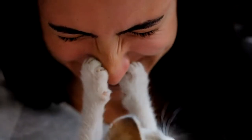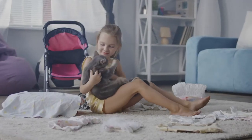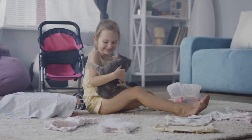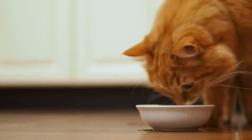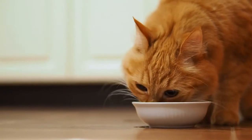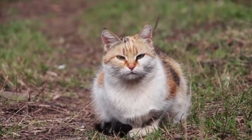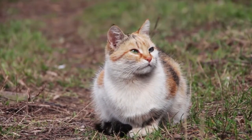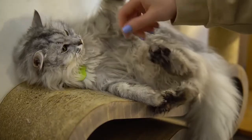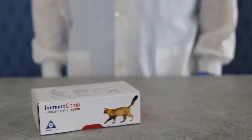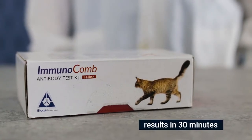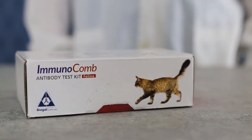Immunocomb feline coronavirus FCOV antibody test kit is designed to determine cat serum IgG antibody titer to feline coronavirus FCOV. The negative result is useful to rule out a diagnosis of feline infectious peritonitis FIP. This dot ELISA kit is easy to handle and delivers reliable results in just 30 minutes.